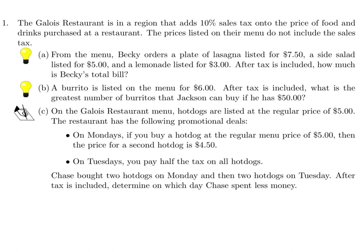They're adding 10%, so you first add it up: 7.5 plus 5 plus 3, and then multiply by 1.10, which is 110% — basically 10% more than the amount. So this is 1.1 times 15.5, and that is $17.05 for her total bill once you add the tax.